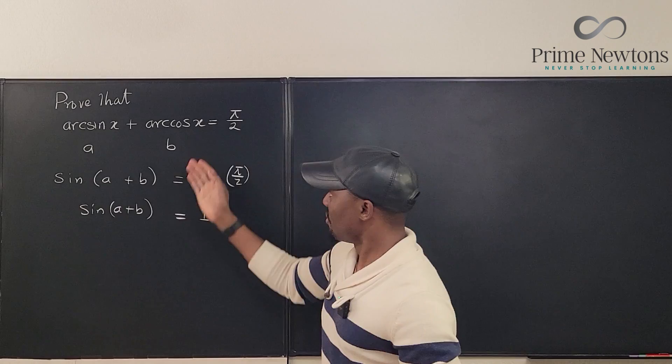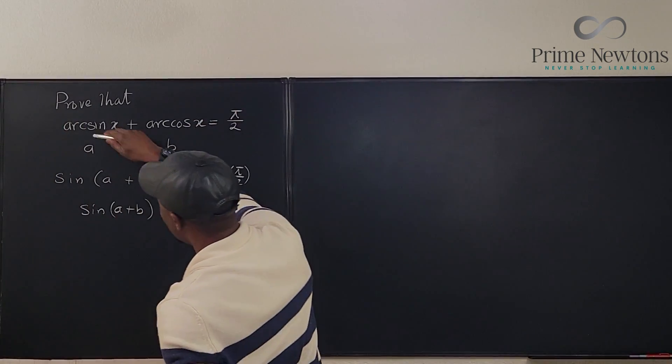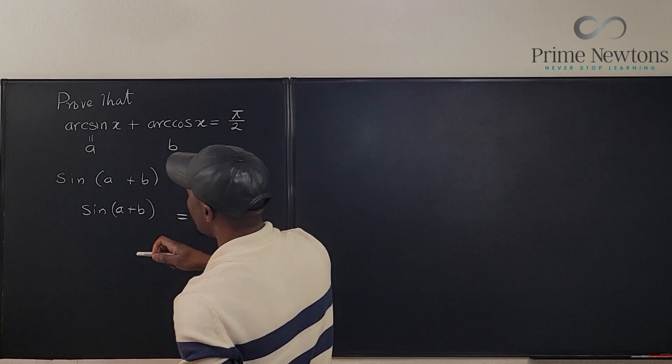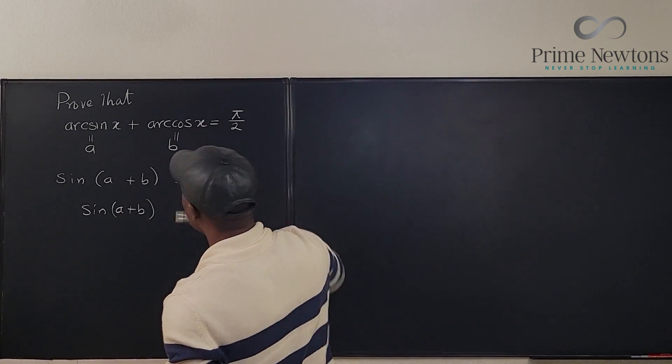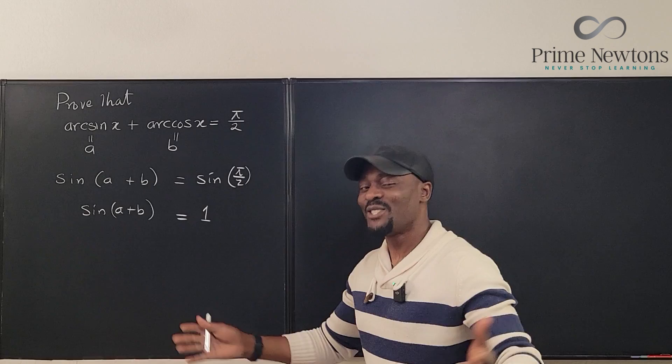Always remember, take the sine of these two. This is what you get. So I'm saying let a be arc sine x and let b be arc cosine of x.